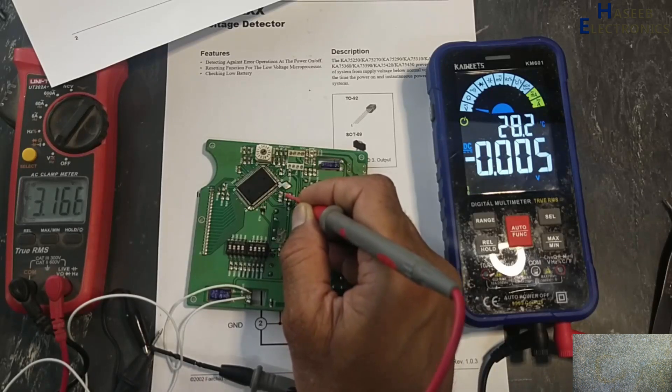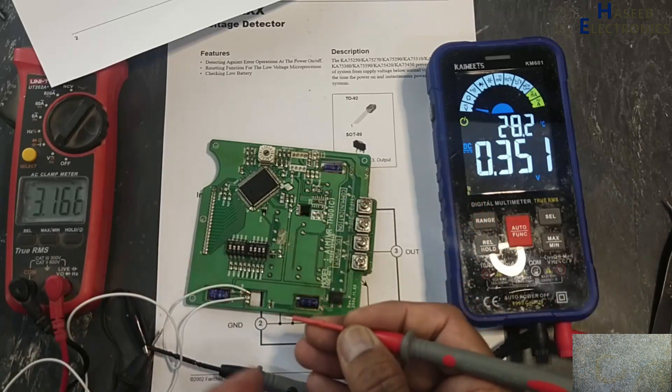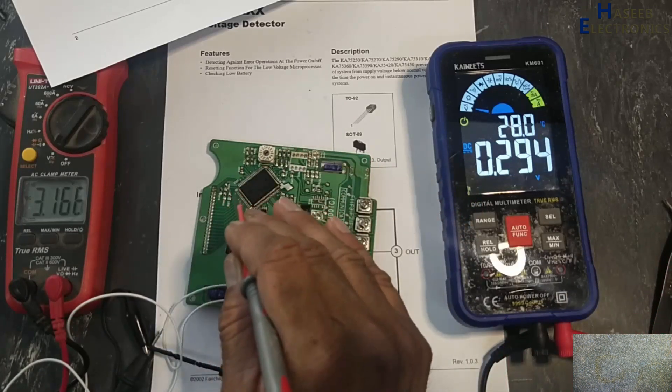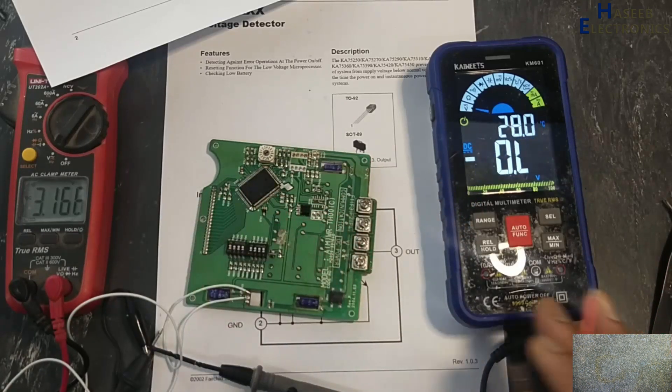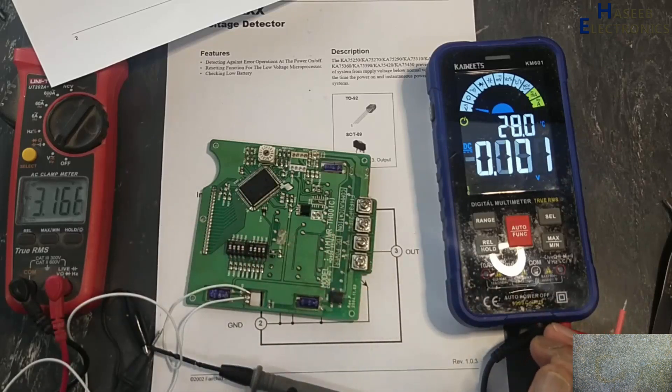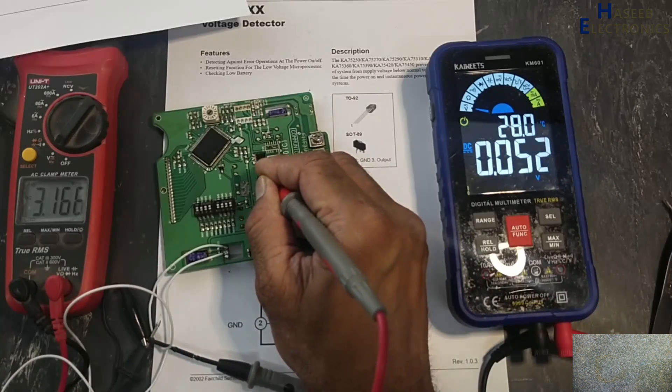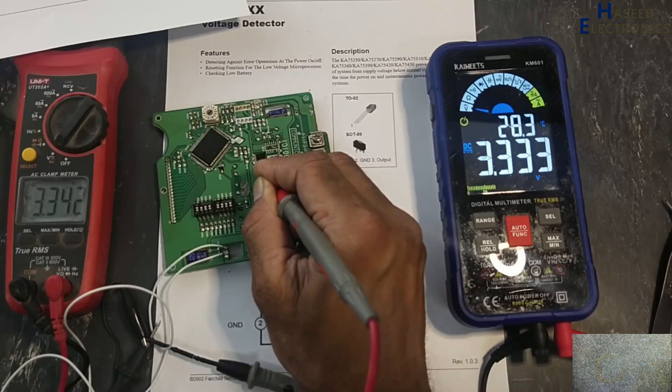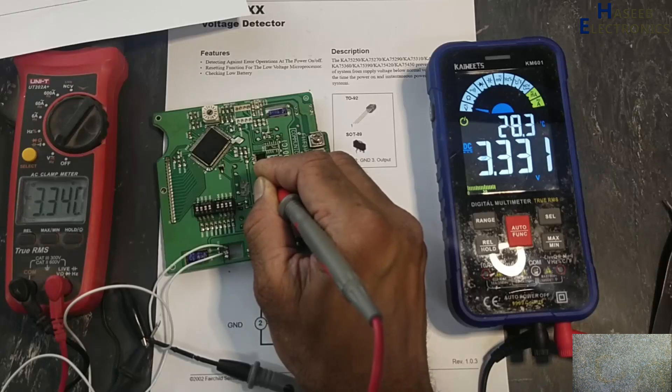If the voltage are less than 3.3 volt at VCC line, it immediately provides reset signal to the microprocessor to stop the function. I hope this video is informative for you. If it is good, give a thumb up. If you have any question, please write in the comments. Thanks for watching. Assalamualaikum warahmatullahi wabarakatuh.